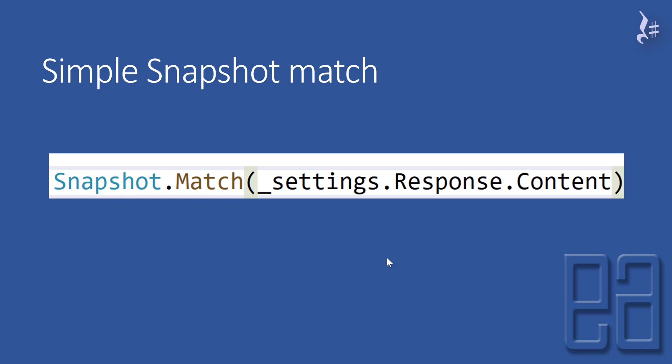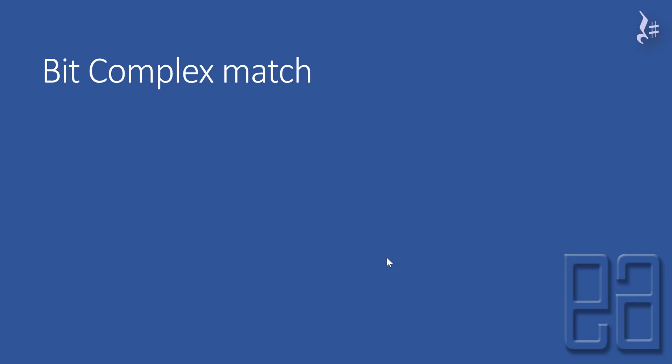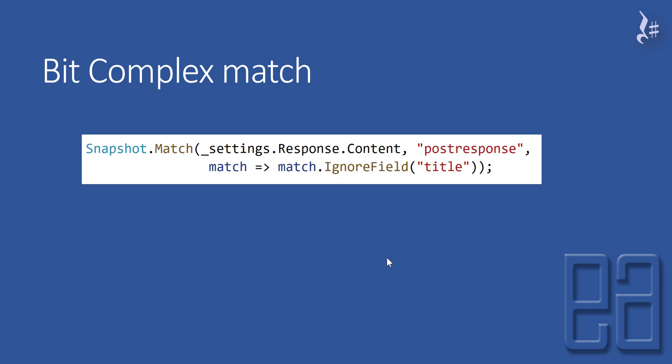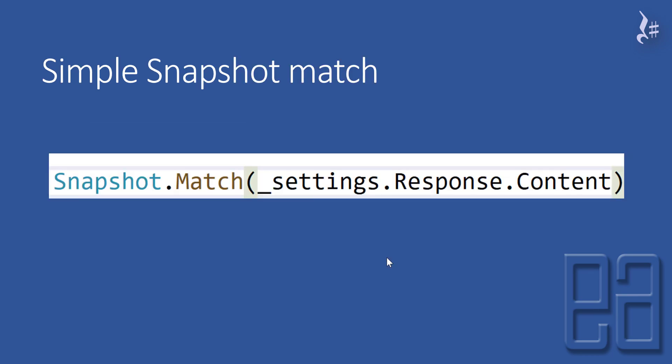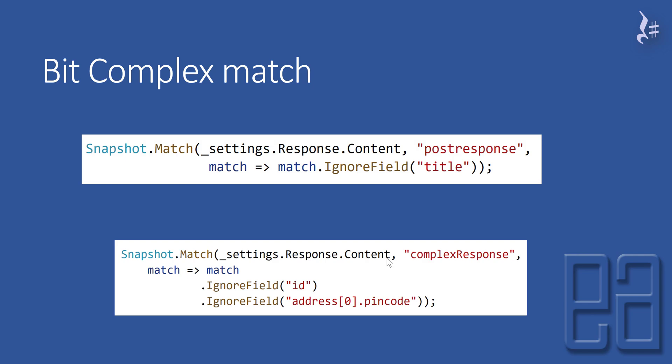If your object is changing and you want to ignore some properties, you can use the ignore field option — for example, ignoring 'title'. You can tell the snapshot to ignore that particular property when comparing snapshot versus response. If you want to go even deeper, such as ignoring a pin code inside an address array, you can ignore the id (which is dynamic) and ignore the address property — for example, address at index zero — since it's an array type. You can go down and ignore that specific nested property.